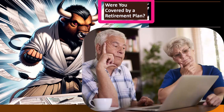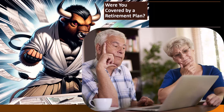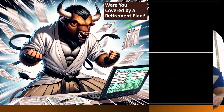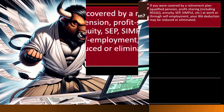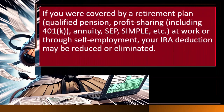Now comes another complexity — were you covered by a retirement plan? If someone doesn't have access to a 401k plan through work, it's fairly straightforward that they'd qualify to contribute to an IRA. But what if you or your spouse did have access to a 401k or 403b plan — could you still put money into an IRA and deduct it?